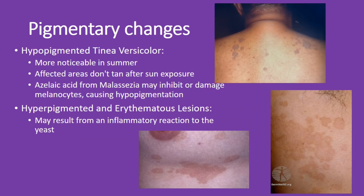Now let's talk about the pigmentary changes in Tinea versicolor. Hypopigmented Tinea versicolor is more noticeable in summer because the affected areas don't tan after sun exposure. Azelaic acid produced by Malassezia may inhibit or damage melanocytes, causing this hypopigmentation. On the other hand, hyperpigmented and erythematous lesions may result from an inflammatory reaction to the yeast.